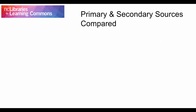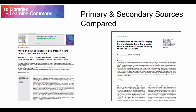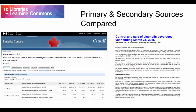Let's take a moment to compare some examples of primary and secondary sources. A journal article that outlines the results of a study on nursing workloads would be considered a primary source. In contrast, a journal article that interprets the results of this study on nursing workloads to support new ideas about improvements to healthcare would be considered a secondary source. Another example of a primary source would be raw, unanalyzed data tables provided by Statistics Canada that describe the annual amount of alcohol sales in Canada. An article that uses these statistics to analyze trends in Canadian wine sales would be a secondary source.